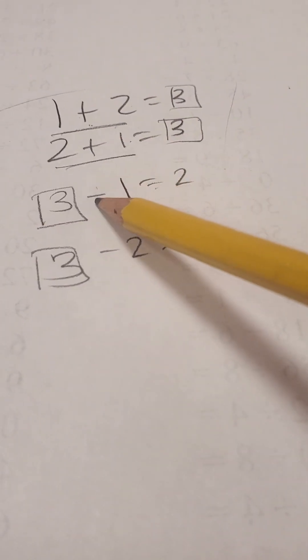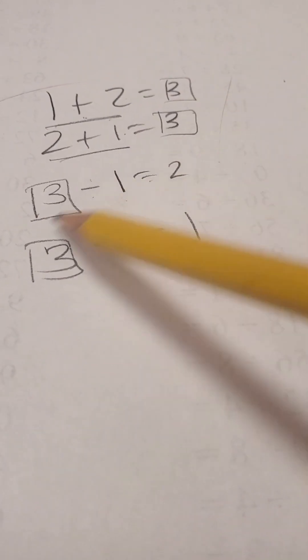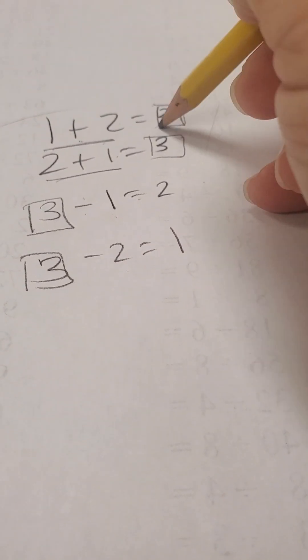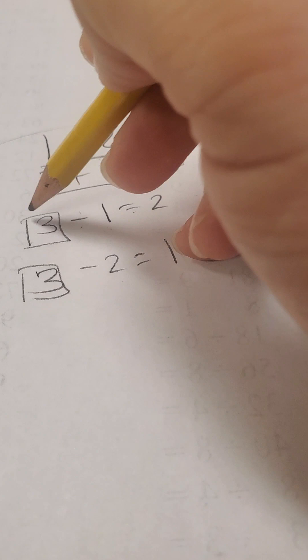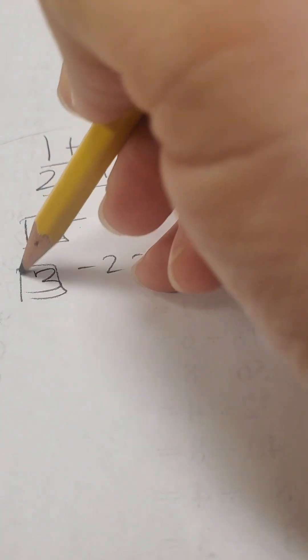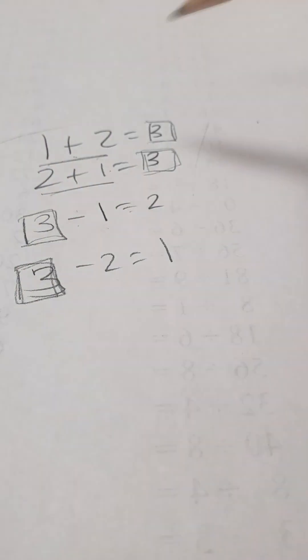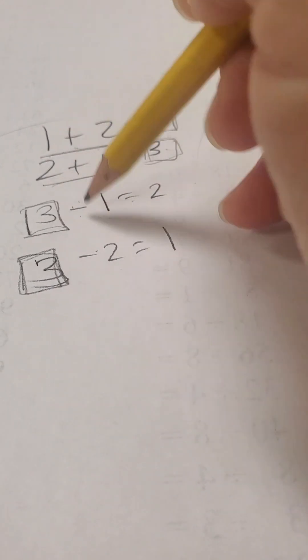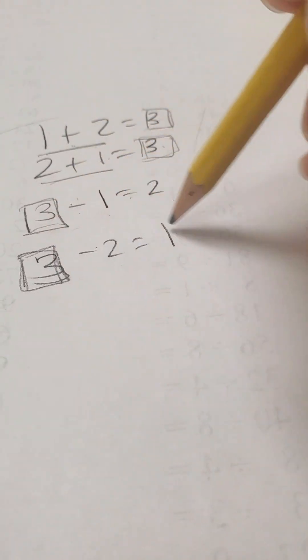But when I get down to the subtraction problem, if I want to come up with a subtraction problem with the same fact family of 3, 2, and 1, this answer is locked in. But also, so is this beginning number here. I cannot move this beginning number with subtraction. That means that 3 minus 1 is 2, and 3 minus 2 is 1.